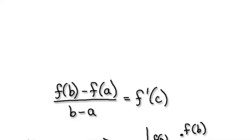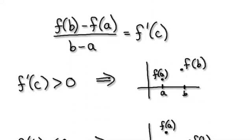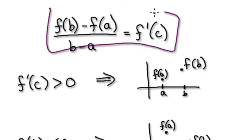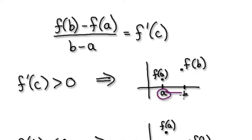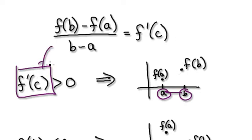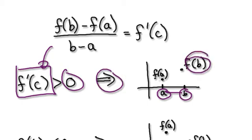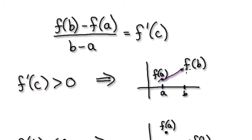Following on from the previous video, we started out with the Mean Value Theorem. Don't forget, c exists somewhere in between a and b. So if you can find a way to realize that in the interval between a and b, f prime is always positive, then it would imply that f of b is bigger than f of a, meaning that your graph will be climbing.